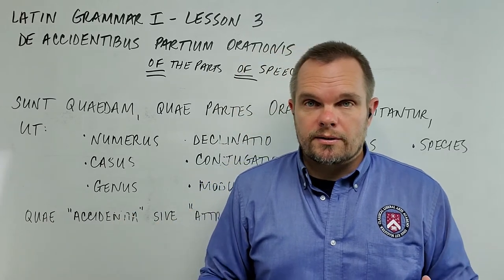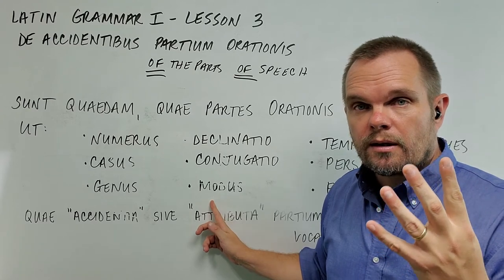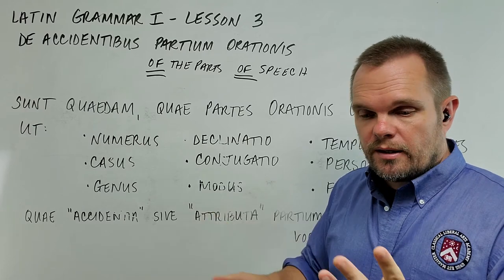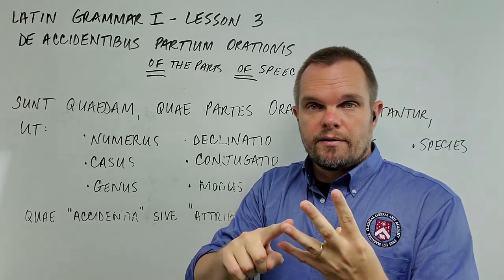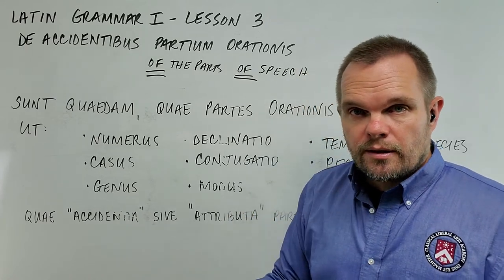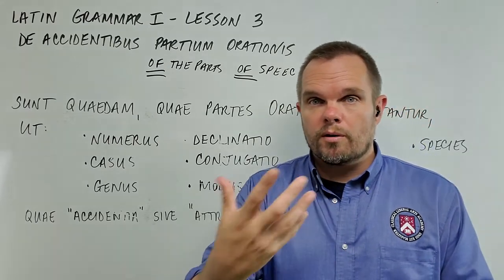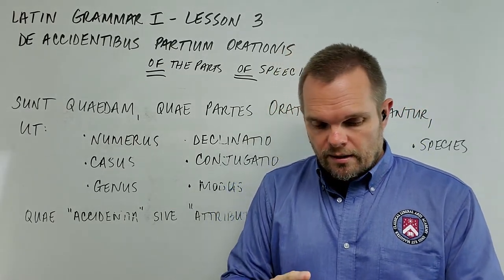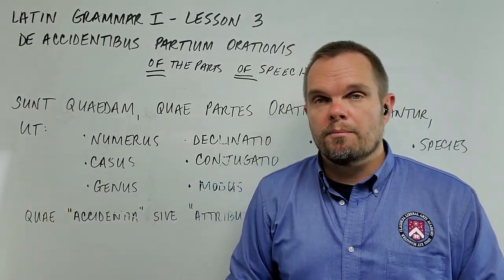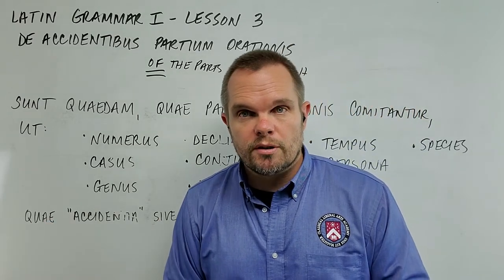So, rule number six — the moods of verbs. There are four common and regularly used moods of verbs: the indicative, the imperative, the conjunctive, and the infinitive. And there are others that may be added: the optative, where we wish something; the potential, where we talk about something able to be done; and the permissive, when we talk about something that may be done. Those are the moods of verbs — that's the content of rule six in lesson three.